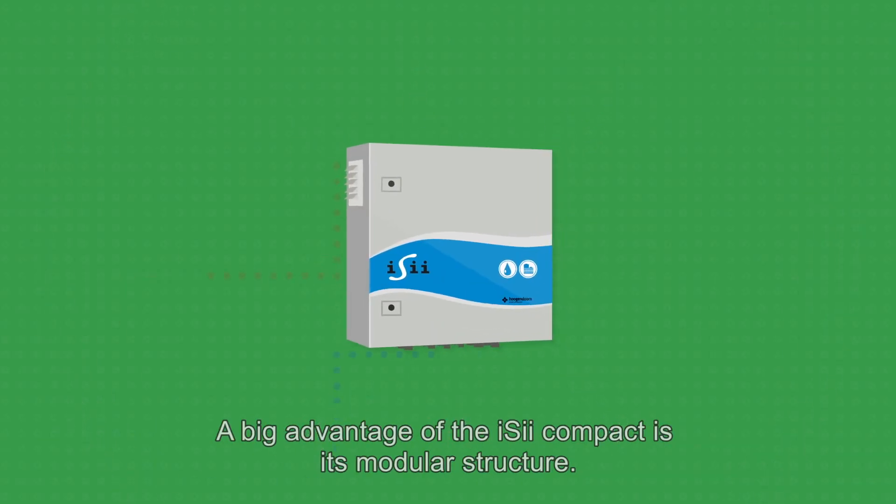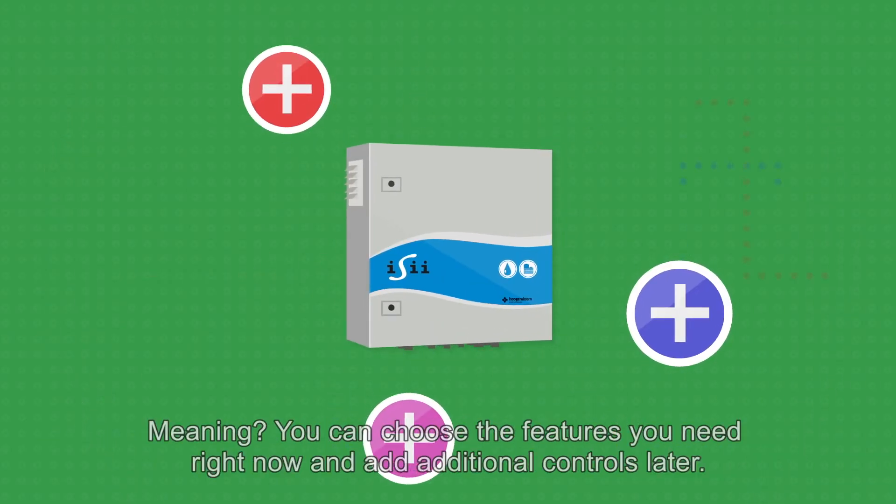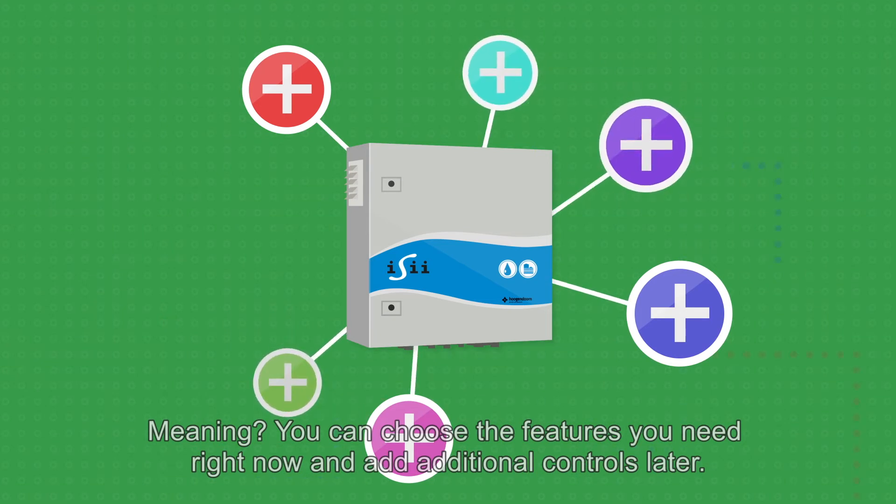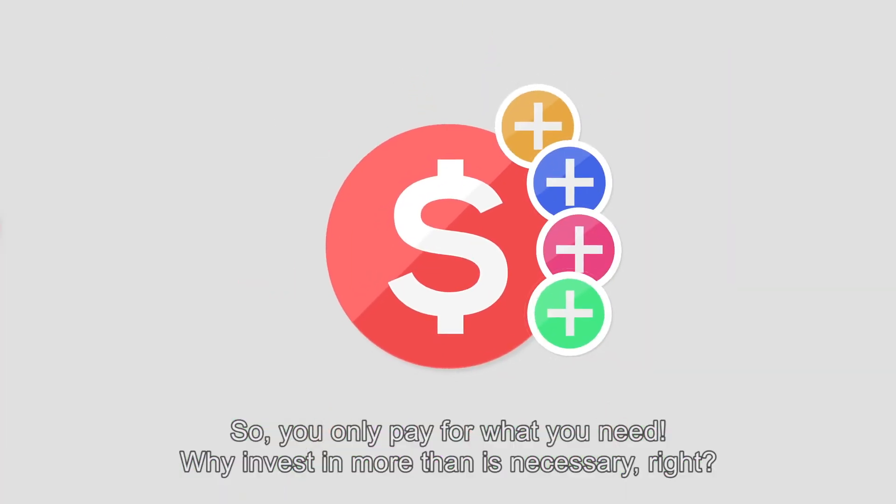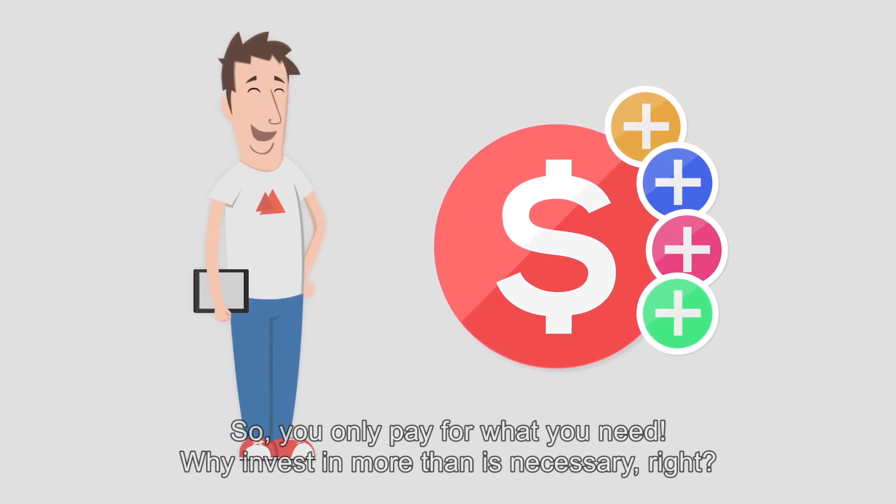A big advantage of the Easy Compact is its modular structure, meaning you can choose the features you need right now and add additional controls later, so you only pay for what you need. Why invest in more than is necessary, right?